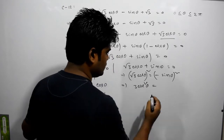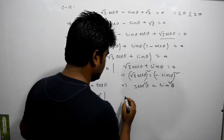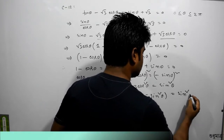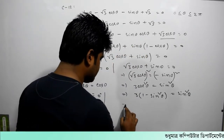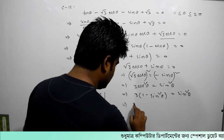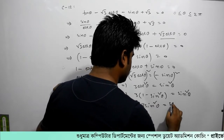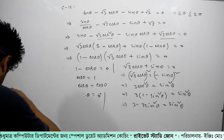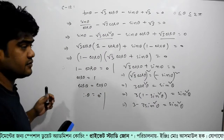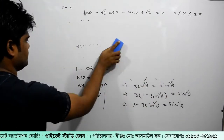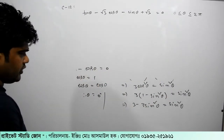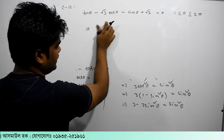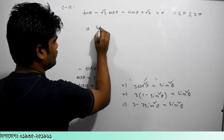So 3 cos squared θ is equal to sin squared θ. We convert using the identity: 3 minus 3 sin squared θ is equal to sin squared θ, which simplifies our expression for sin squared θ.